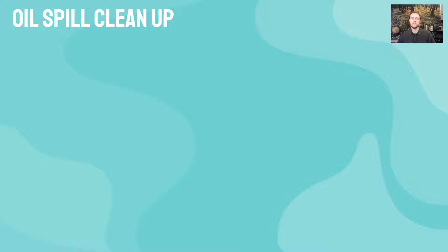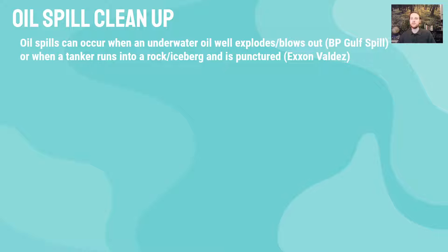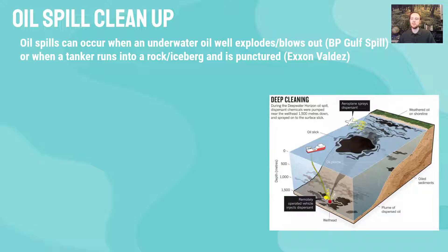Now let's talk about how oil spills can be cleaned up. There are two major ways oil spills into the ocean. One is a wellhead explosion or blowout — this is what happened with the Deepwater Horizon BP oil spill, where the well exploded and oil leaked from the ocean floor. The other is a tanker — a large ship transporting crude oil — running aground, hitting an iceberg, or hitting a rock, as happened with the Exxon Valdez, the most famous oil tanker spill.